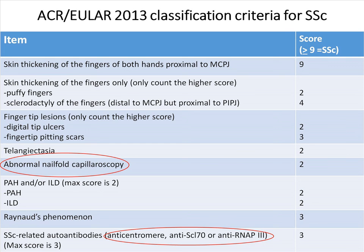The latest 2013 classification criteria for systemic sclerosis is more sensitive than the 1980 criteria, allowing more patients to be classified as systemic sclerosis early in their disease. It helps with the classification of limited cutaneous subtype and those without skin involvement — the sine scleroderma subgroup. It addresses the three hallmarks of systemic sclerosis: fibrosis, as reflected by skin sclerosis and interstitial lung disease; vasculopathy, by recognizing fingertip lesions and nail-fold capillaroscopy; and autoimmunity, characterized by SSc-related autoantibodies. A score of 9 or more would suggest systemic sclerosis.